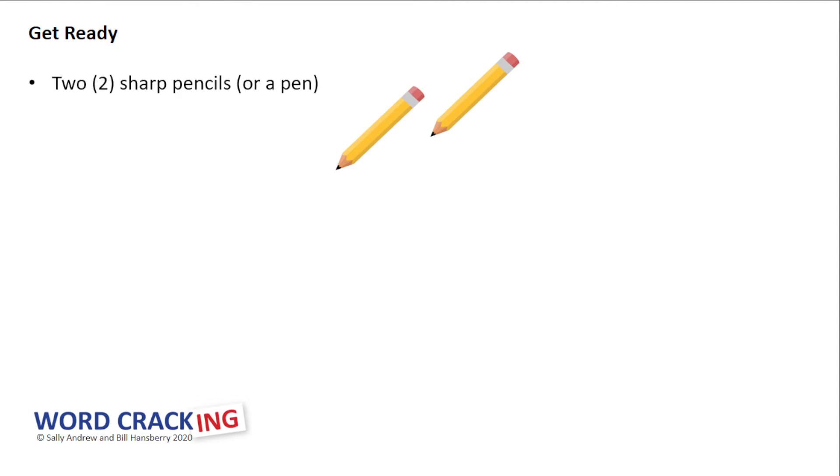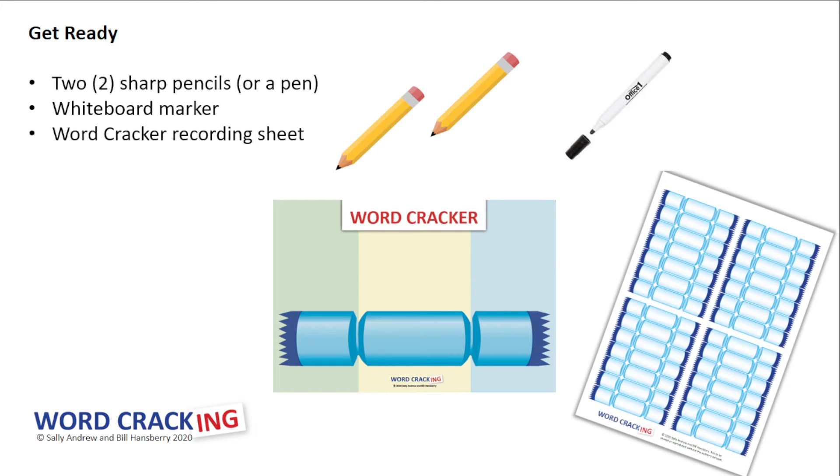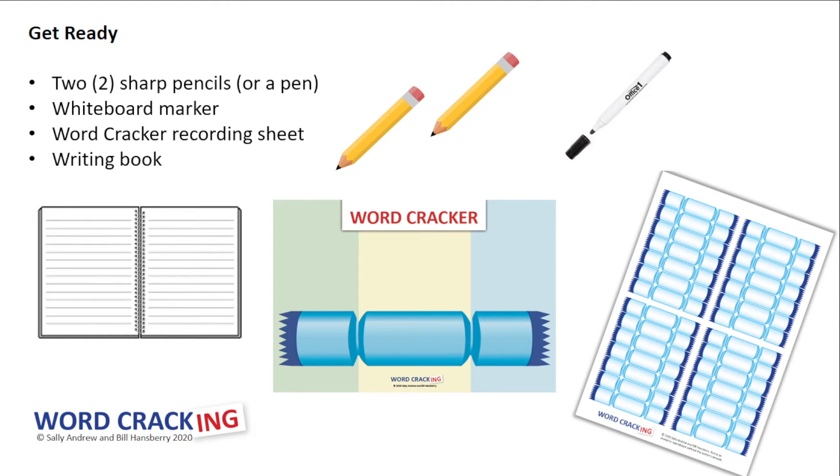So you'll need two sharp pencils or a pen. You're going to need a whiteboard marker and your Word Cracker student whiteboard, or your normal student whiteboard with sections set up for prefixes, roots, and suffixes. You're going to need your Word Cracker recording sheet and, like always, a writing book for when we write our stories a little bit later on.